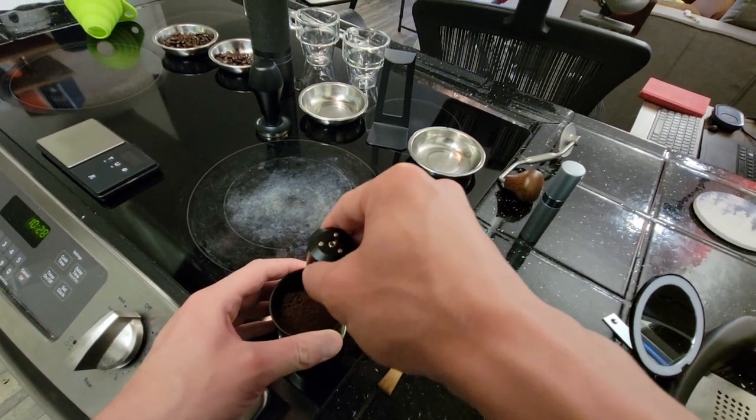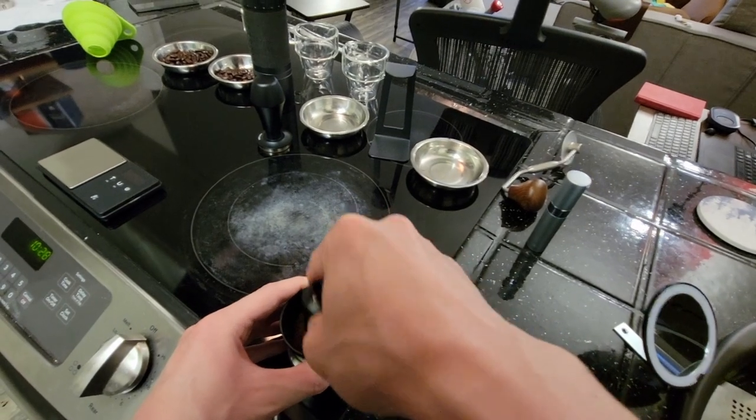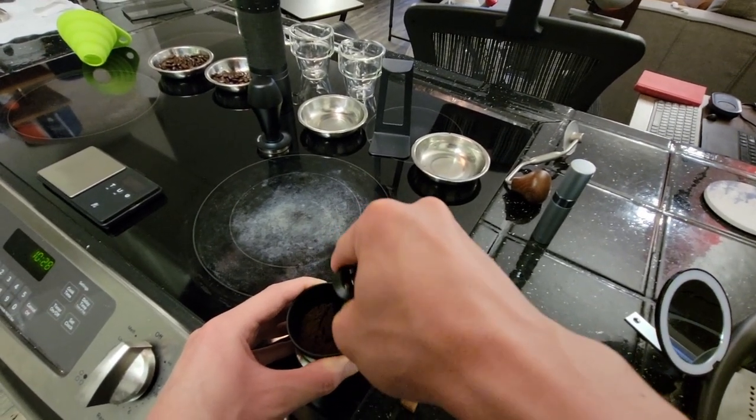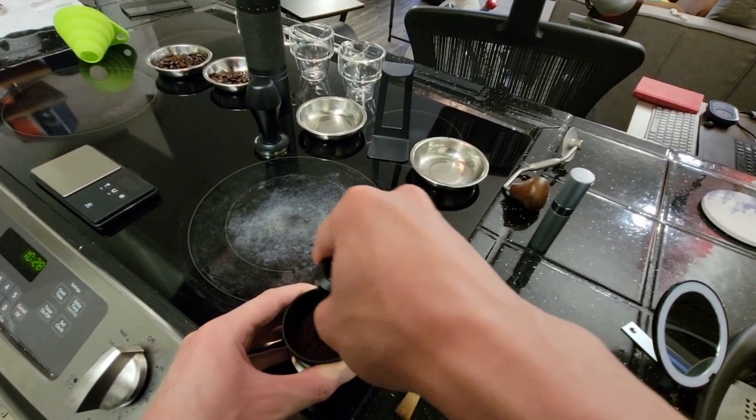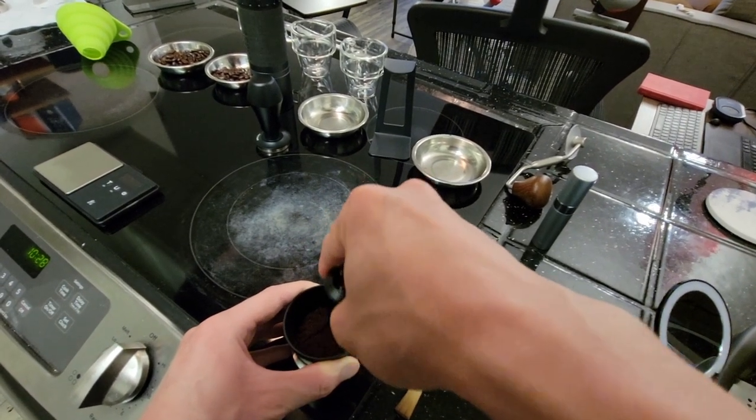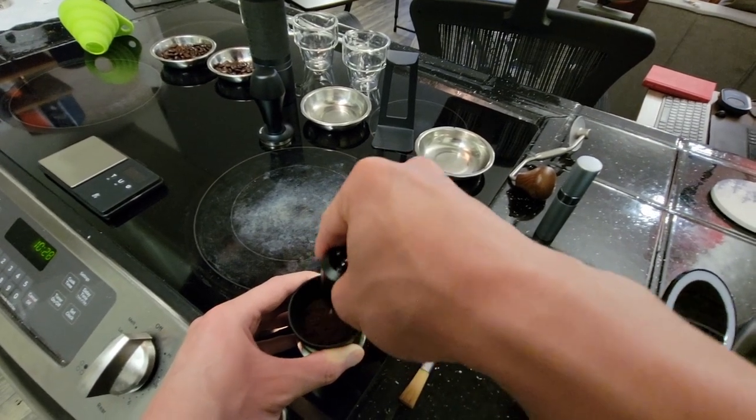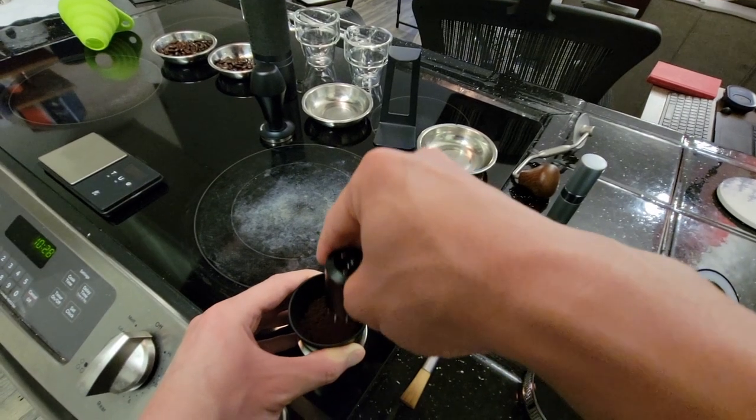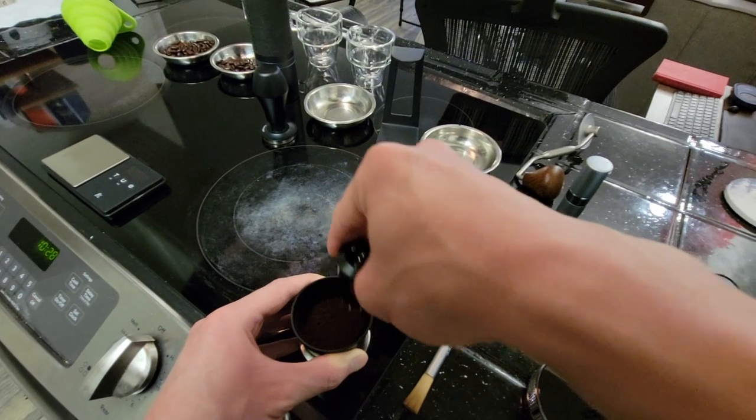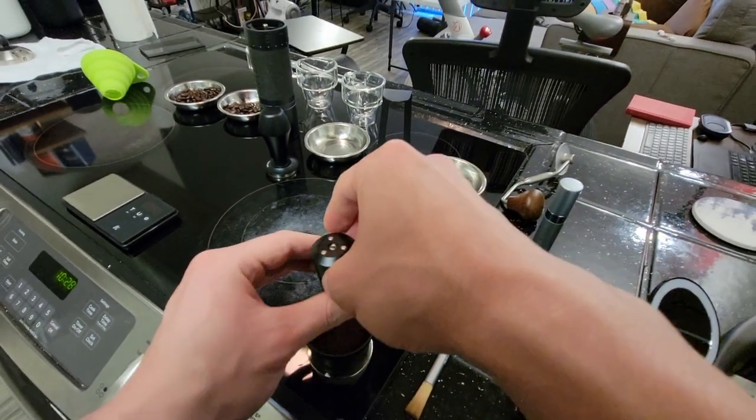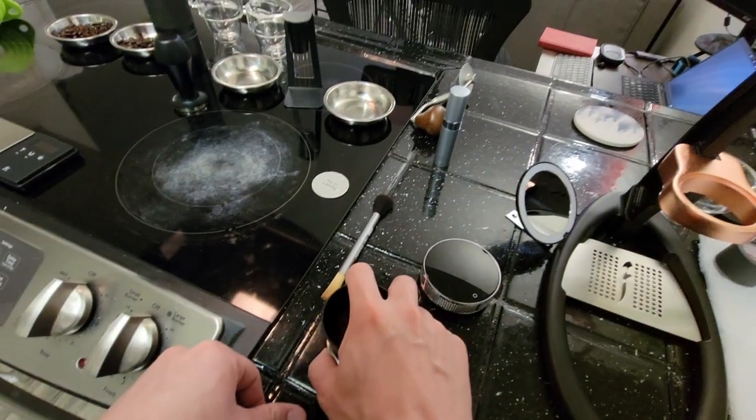So right now I'm going to be taking the WDT tool and going to be starting to go through and really try and break up some of these smaller clumps down below. Now, when you use the WDT tool or Weiss distribution technique tool, you want to start at the bottom. You don't want to be scraping the bottom. You might risk bending the needles, but you start at the bottom and work your way in small circles while moving your arm in sort of a bigger circle pattern. You'll notice I'm doing small, tight circles, but still kind of cycling my way around the portafilter here.